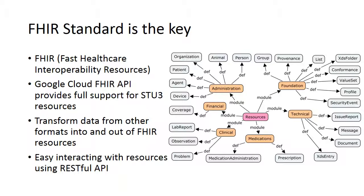The cloud makes it very easy to interact with those FHIR resources. In RESTful API, for example, we can use the standard GET, POST, or PUT methods to access those resources. The right graph shows some of the resources in the FHIR standard — for example, patient, device, and coverage. For each resource there is a fixed definition, and you can fill in a lot of fields.